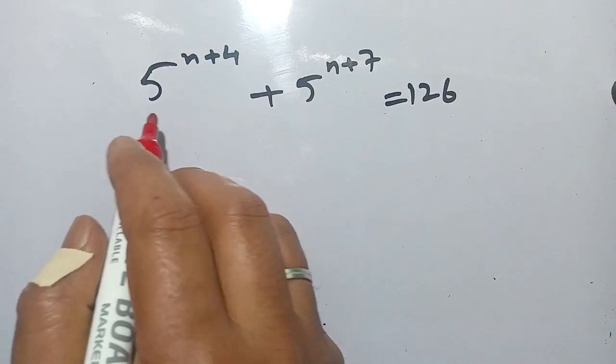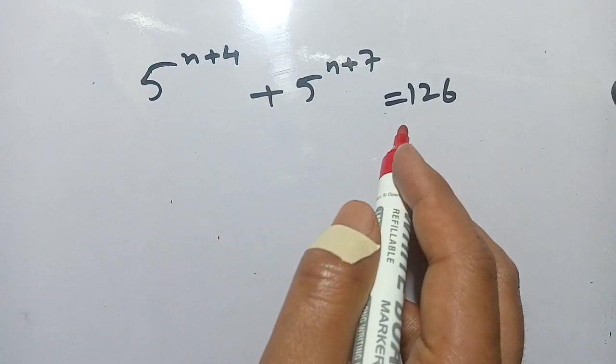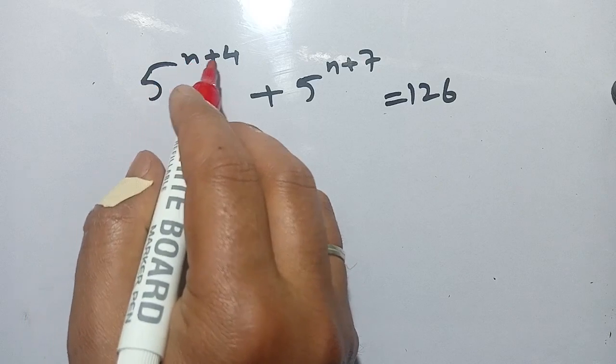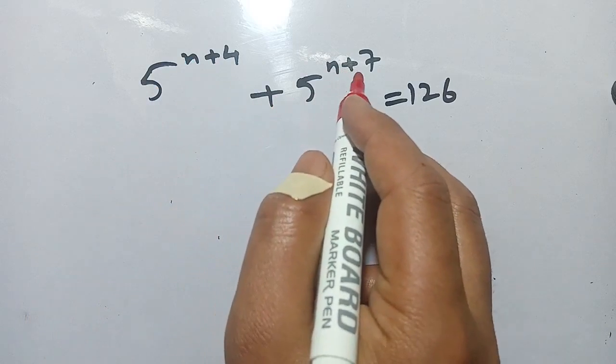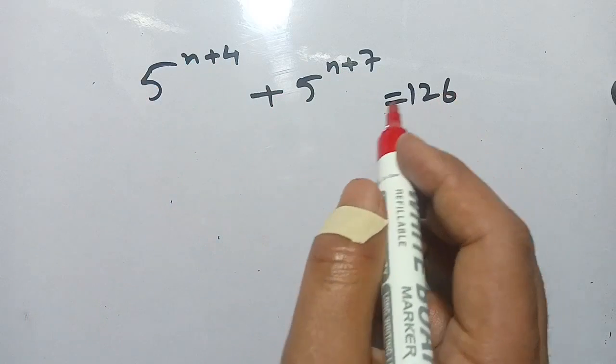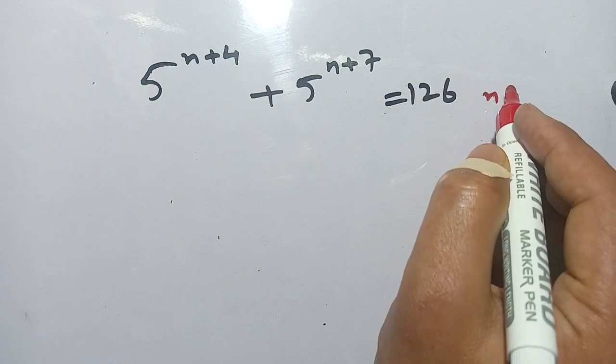Hello everyone, in today's class we are going to solve this exponential equation: 5 power n+4 plus 5 power n+7 is equal to 126, and we have to find the value of n.